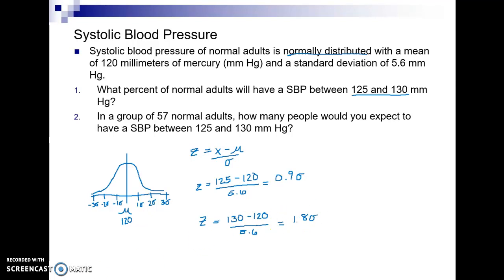So my next step is to put this information on to my normal distribution. So I changed my pen color so we can see this. So the first one is at 0.9 just below 1 so right about here, this is 125 as the blood pressure and that's where Z is 0.9 standard deviations. Then our second value is at 1.8 so just below 2 right here and that is a blood pressure of 130 where Z is 1.8. So we're asked for the amount between these two values so I'm doing some shading here.